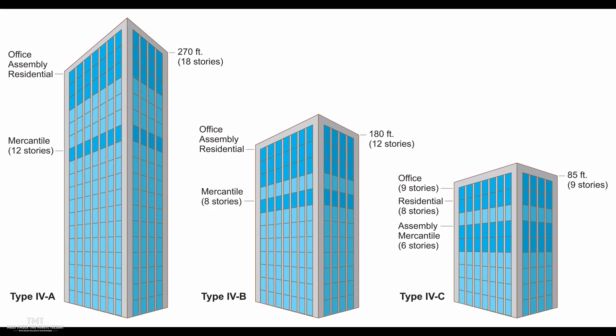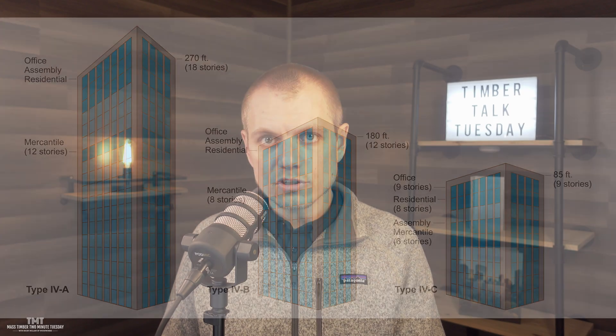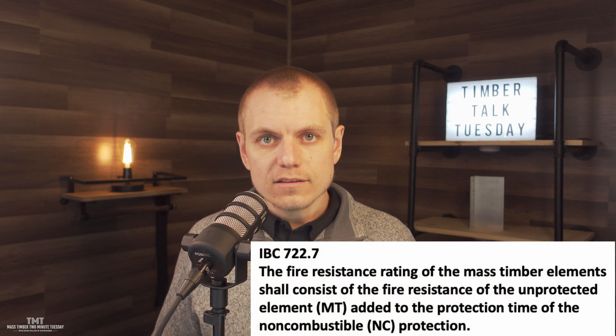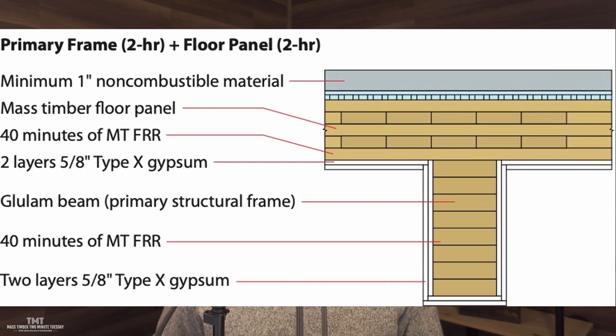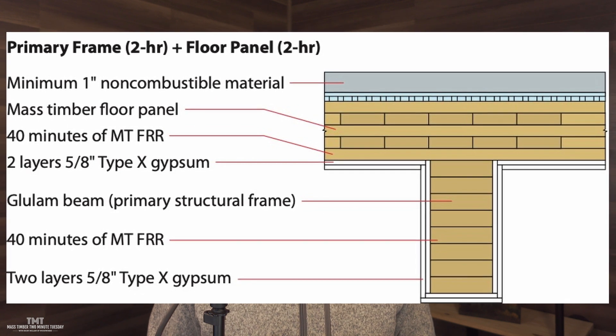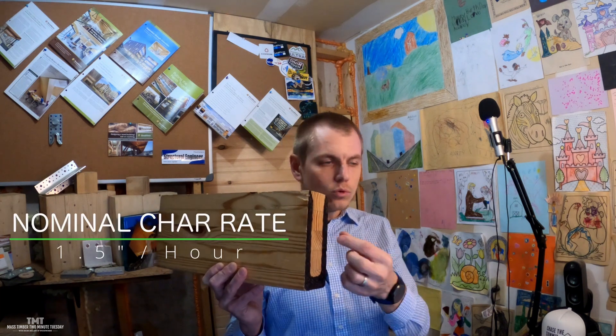This is certainly done in the new tall mass timber construction types where in Type 4A and 4B the code requires timber encapsulation. You're actually using that timber encapsulation as a minimum two-thirds of the required fire resistance rating of that element. For example, in a Type 4B building with a floor beam that has a two-hour fire resistance rating requirement, if we're encapsulating that beam we need to get two-thirds — or 80 minutes — of that two hours through non-combustible layers. Usually that's going to be two layers of 5/8-inch Type X gypsum wallboard.